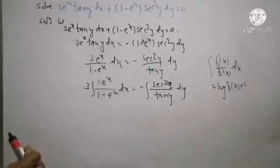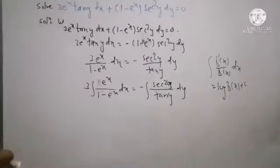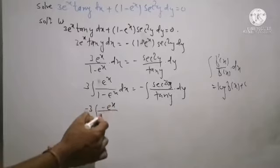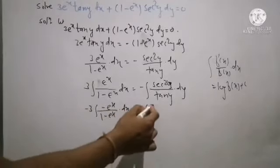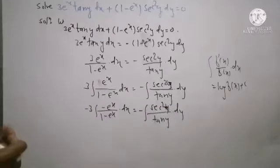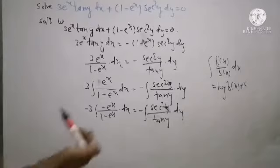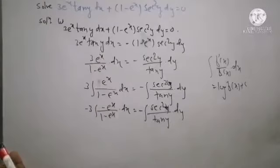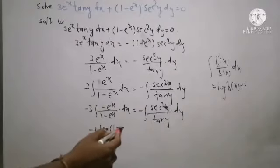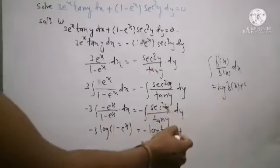The derivative of one is zero and e raised to x has derivative e raised to x, but the term is minus, so we have derivative of denominator: minus e raised to x. The numerator is e raised to x. We adjust the minus sign by taking the coefficient as minus three, and in numerator we take a minus sign so the numerator becomes minus e raised to x, adjusting the derivative of the denominator. We adjust by taking minus sign out of integration. So we get the integration of the left hand side as log of one minus e raised to x, and integration of the right hand side is also log of tan, as derivative of tan y is sec y in the numerator, plus c.